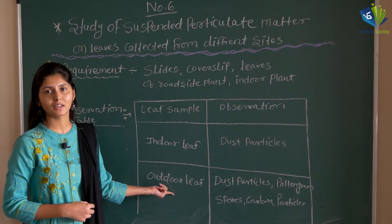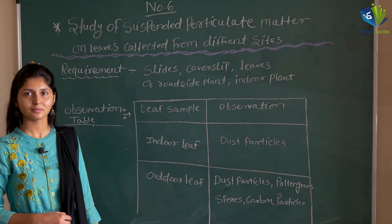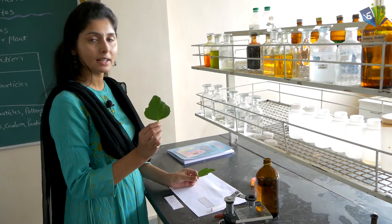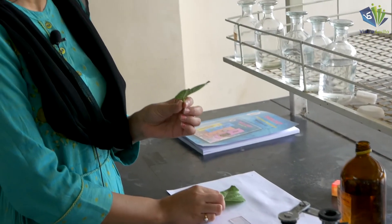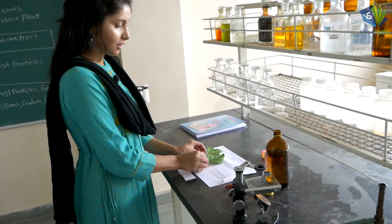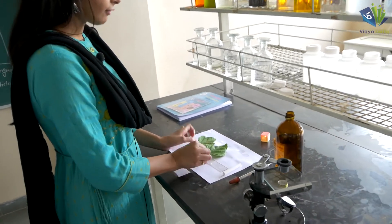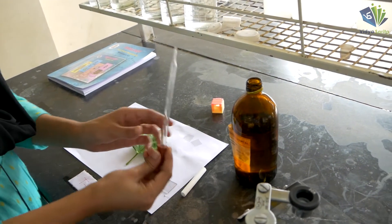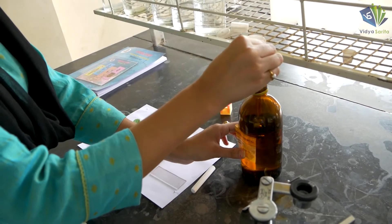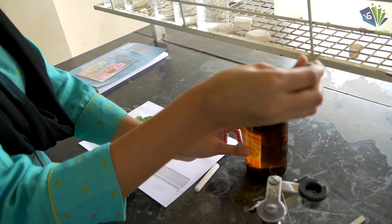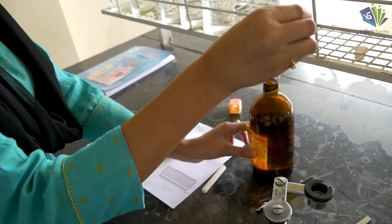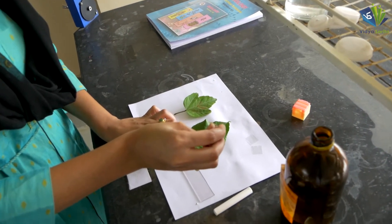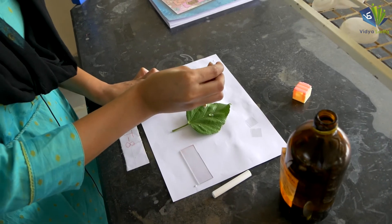So let us do it practically. We have two leaves — this leaf is an indoor plant leaf and this leaf is an outdoor plant leaf. We have to put a drop of glycerin on both leaves. Take a dropper, take a drop of glycerin, and put a drop on both the indoor and outdoor leaf.